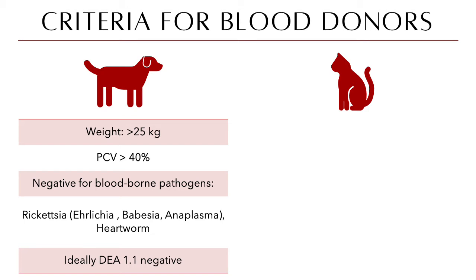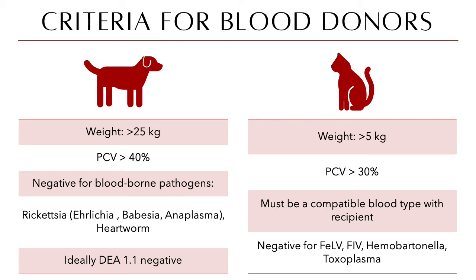For cats, the ideal donor weight is greater than 5 kg — typically larger breeds such as British Shorthairs, Exotic Shorthairs, or Maine Coons. The PCV must be greater than 30%, and the donor must be a compatible blood type with the recipient. Cats must also be negative for blood-borne pathogens including Toxoplasma, Hemobartonella, feline leukemia virus, and feline immunodeficiency virus, all of which can be transmitted via blood.